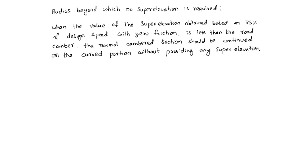Here, camber C equals 0.75 V squared by R into G. This is from the formula V squared by Rg equals E plus F.